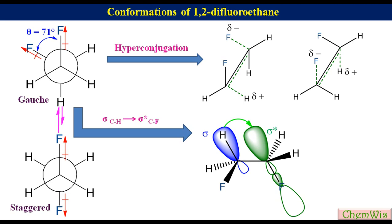There is one more such interaction between the CH sigma bonding orbital on the right carbon and the empty CF sigma star antibonding orbital on the left carbon. Because of very high electronegativity of the fluorine atom, this stabilizing interaction dominates over the destabilizing interactions, thus making gauche conformation of 1,2-difluoroethane more stable than the staggered conformation.